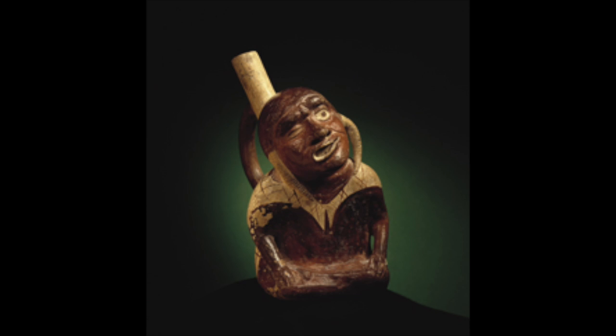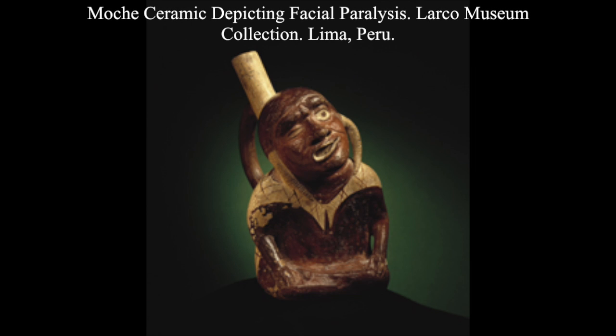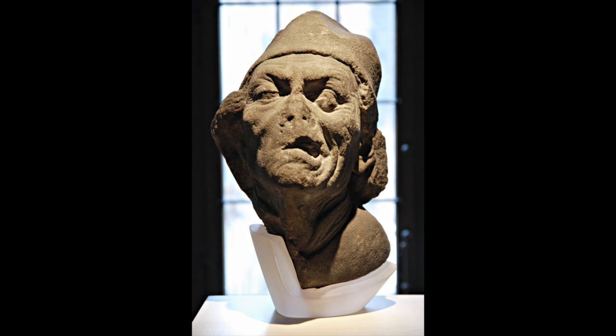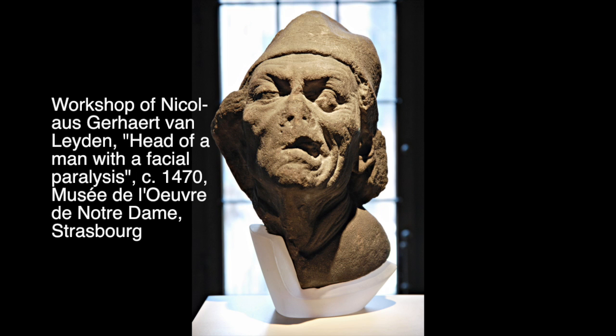Although Sir Charles Bell was the first to describe the anatomic basis that bears his name, in recent years it has been shown that European physicians provided earlier descriptions of this facial paralysis. It has even been seen in Greek, Persian, and Roman physicians, and also in varying art forms. The ceramic sculpture pictured here was found in Peru, depicting the facial paralysis we were talking about. Also this piece of work, dating back to 1470, called 'Head of a Man with Facial Paralysis,' was found in Notre Dame by Nicholas Gerhard van Leyden.